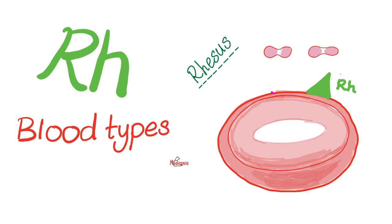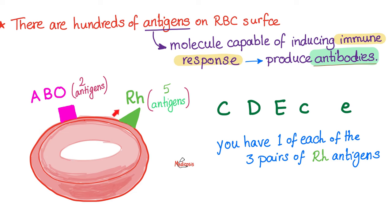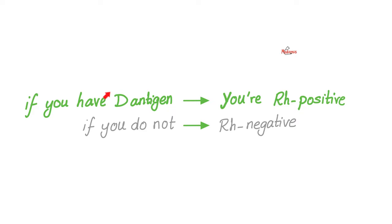We are done with ABO groups. Let's talk about RH groups. We're asking: are you positive or negative? Do you have the RH antigen or not? The RH antigen is called the D antigen — it's found on the surface of the red blood cell. If you have this capital D, you're RH positive. If you do not have it, you're RH negative.